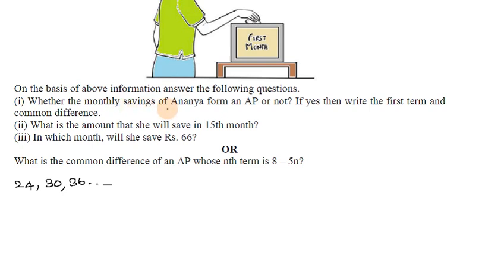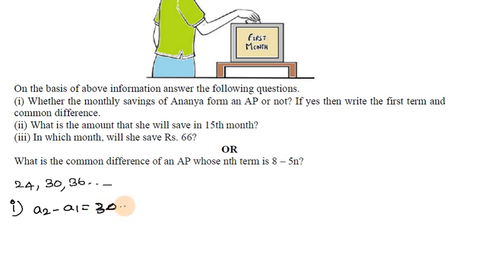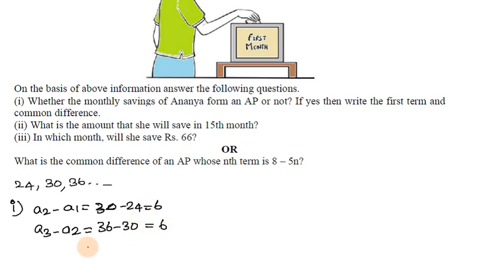Whether the monthly savings of Ananya form an AP or not. So this is an AP. The common difference A2 minus A1 equals 30 minus 24 equals 6. And A3 minus A2 equals 36 minus 30 equals 6. The common difference is the same, so this is an AP.